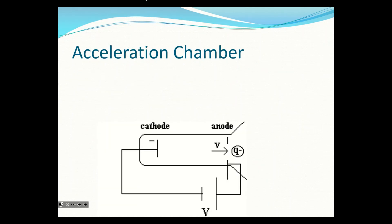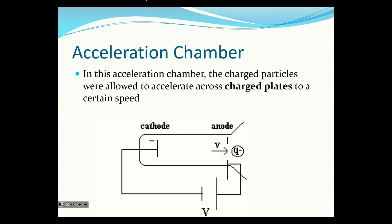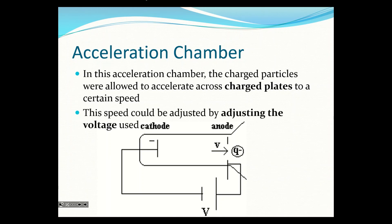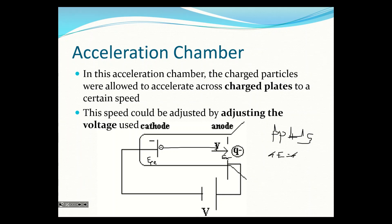We're going to talk about the acceleration chamber first, and we've actually done this before. In this acceleration chamber, charged particles were allowed to accelerate across charged plates to a certain speed, which could be adjusted by adjusting the voltage. If we have a negatively charged particle, it has electrical potential energy on one side, then it zips across and as it leaves it has kinetic energy. To solve this we use conservation of energy: energy before equals energy after.